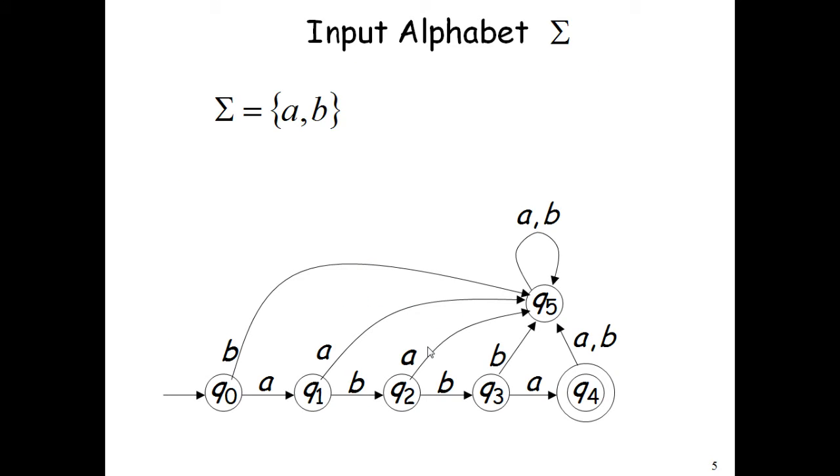We'll go through an example to understand all these five tuples. So input alphabets are a and b. When you look at the diagram, it represents a DFA having six states that are q0, q1, q2, q3, q4, and q5. And when you look at the outgoing arrows from each state, on those arrows these input alphabets are written, which is a and b. No other alphabet is used in this diagram, so here Sigma is a and b.